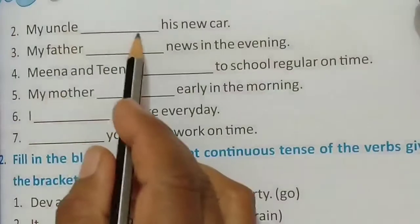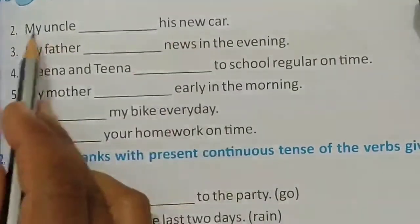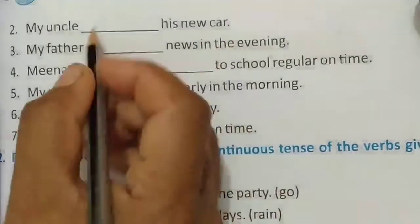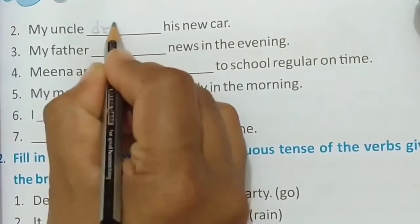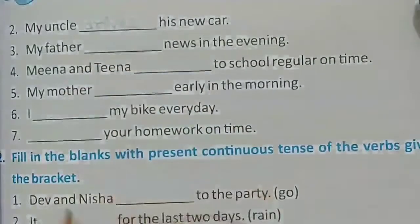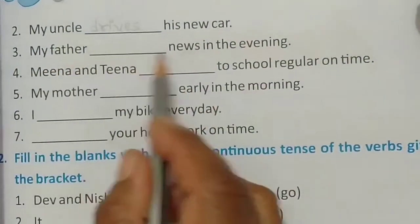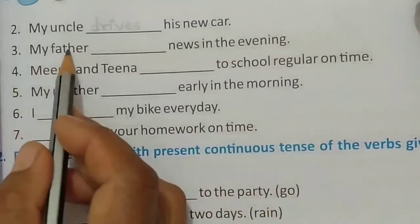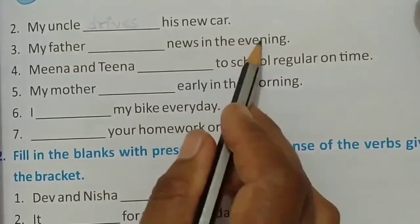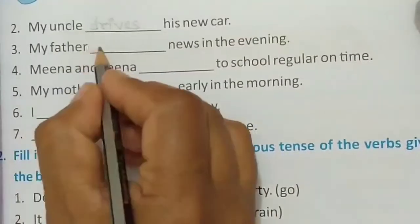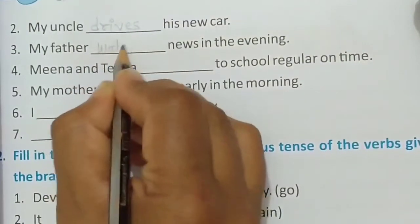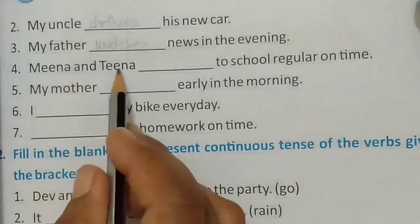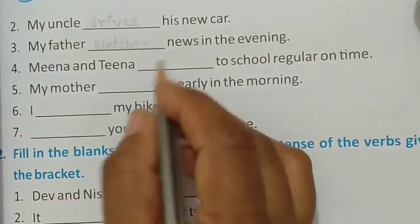The second sentence: 'My uncle dash his new car.' My uncle is a singular subject, so here the verb is drives — D-R-I-V-E-S. 'My father dash news in the evening.' My father is a singular subject. Shaam ko kya karte hain? Father news ko watch karte hain. So: watches news in the evening.